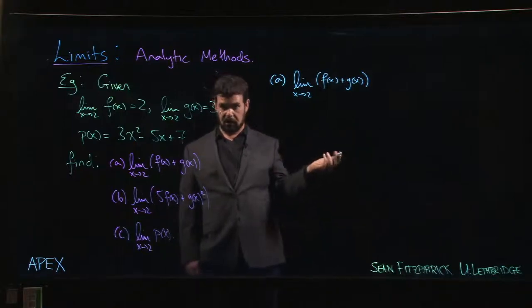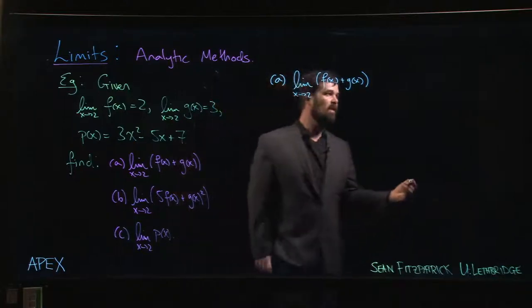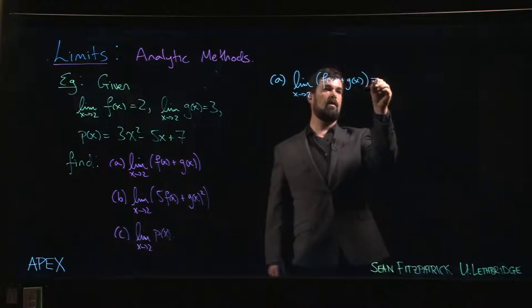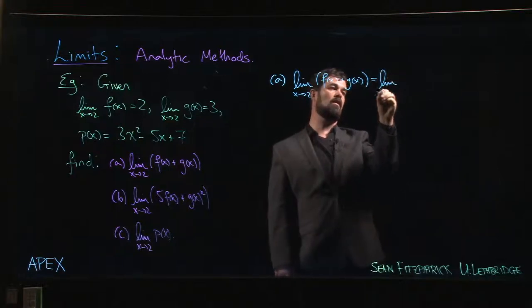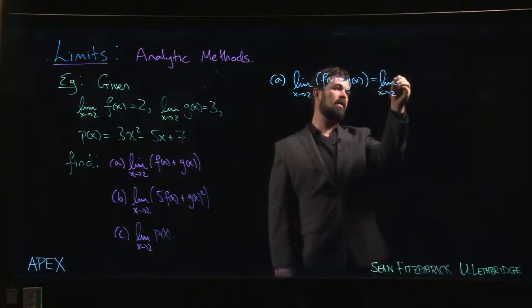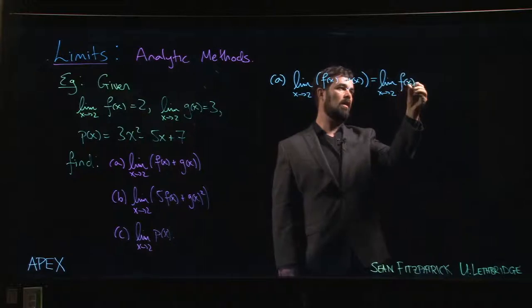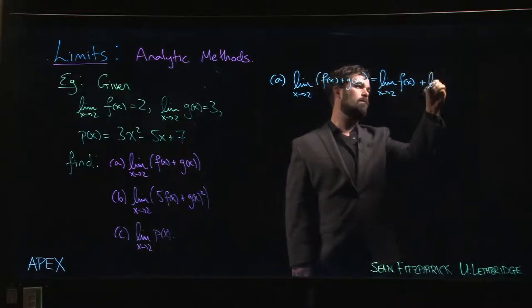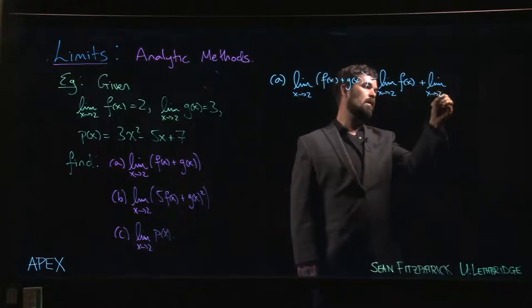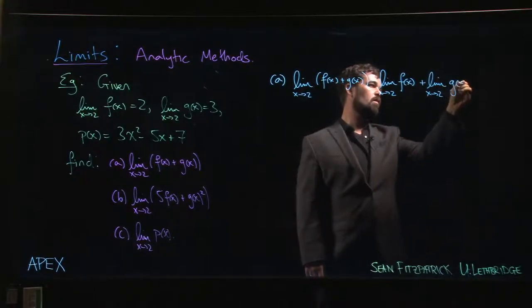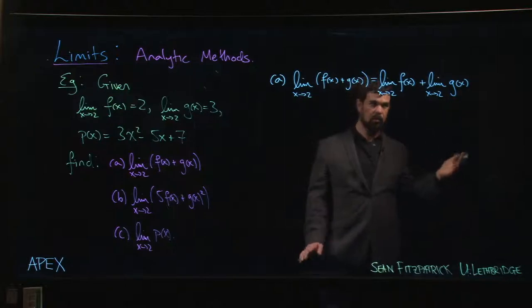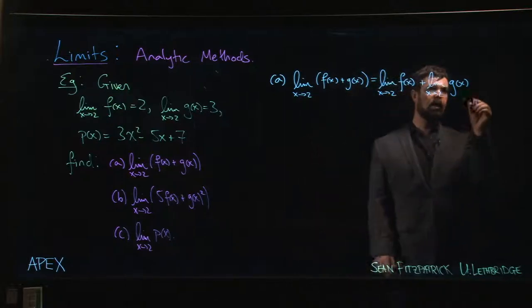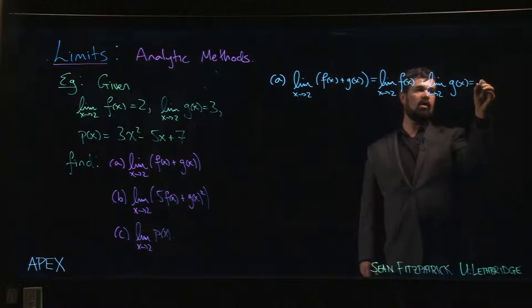Just write down 2 plus 3, answer is 5, you're done. If you really want to spell things out and make it clear what's going on, you might add this intermediate step. The limit of f plus g is the limit as x approaches 2 of f(x) plus the limit as x approaches 2 of g(x). Now it's crystal clear what you're doing, what property you're applying.